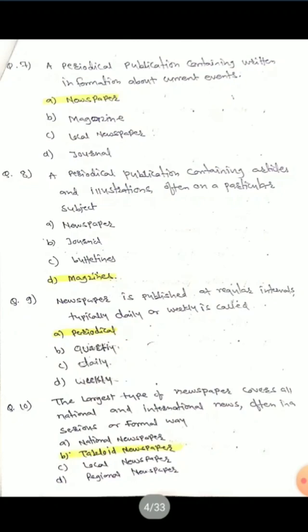Question 10: The largest type of newspaper covers all national and international news, often in a serious or formal way. There are different kinds of newspapers discussed here.